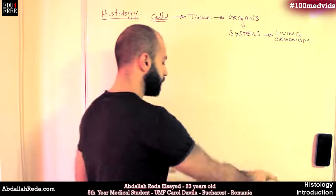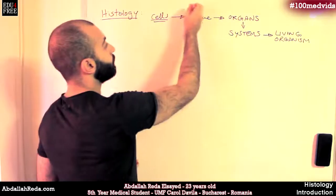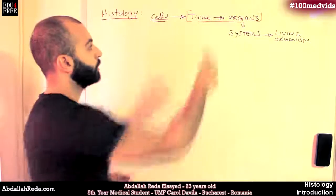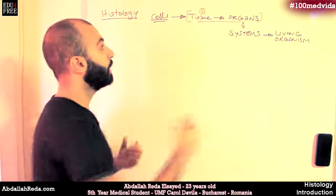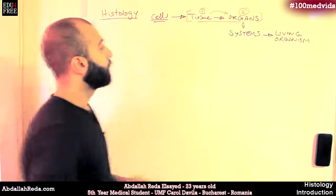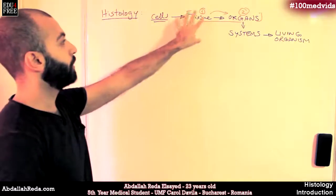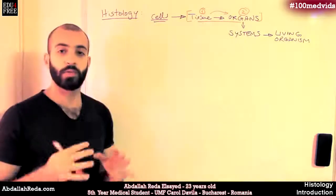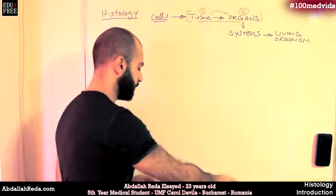So histology is the science that deals with the structure of the tissues that build up the organs. First we're going to deal with the tissues — study them and know what they're made of — and then we will talk about the organs. In this video series we're going to talk about the tissues, and we can classify them in the human body under four main classifications.